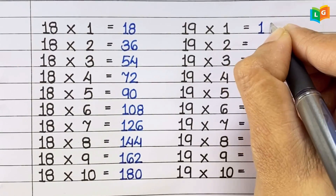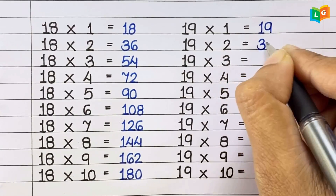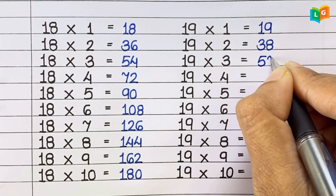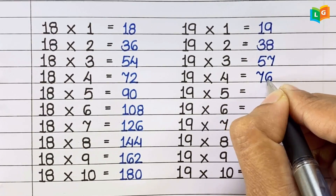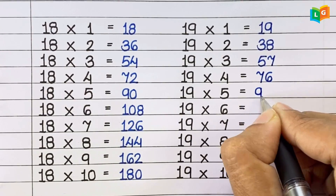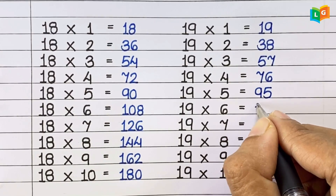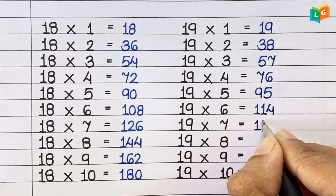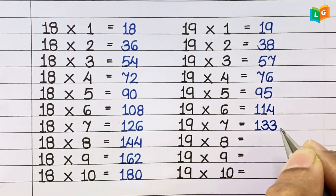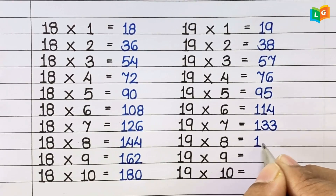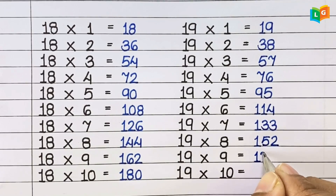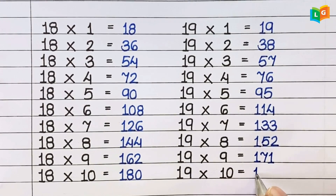Now let's see table of 19. 19 1s are 19, 19 2s are 38, 19 3s are 57, 19 4s are 76, 19 5s are 95, 19 6s are 114, 19 7s are 133, 19 8s are 152, 19 9s are 171, 19 10s are 190.